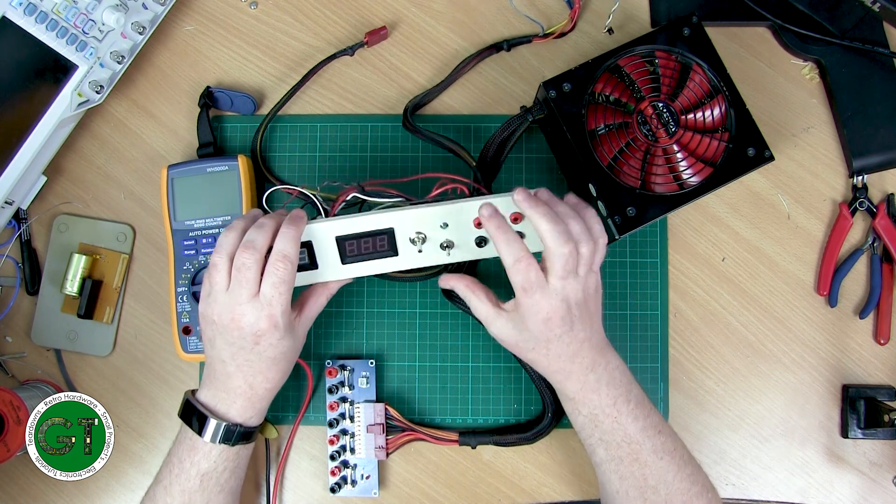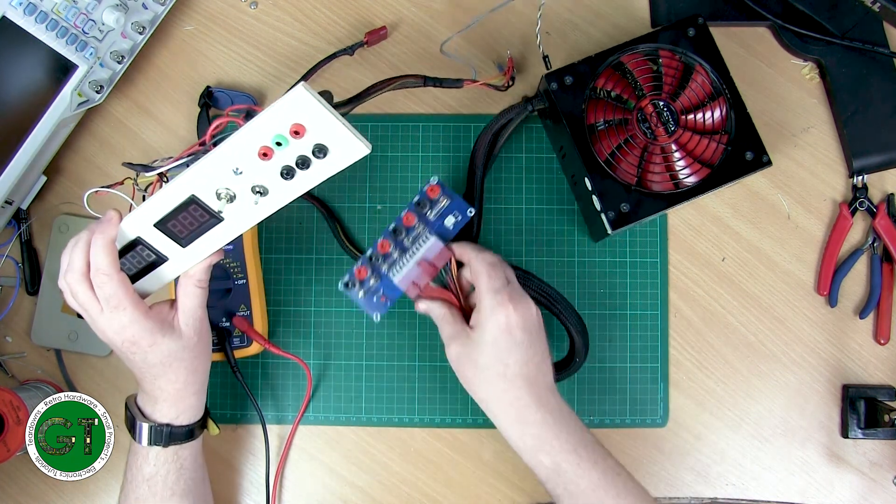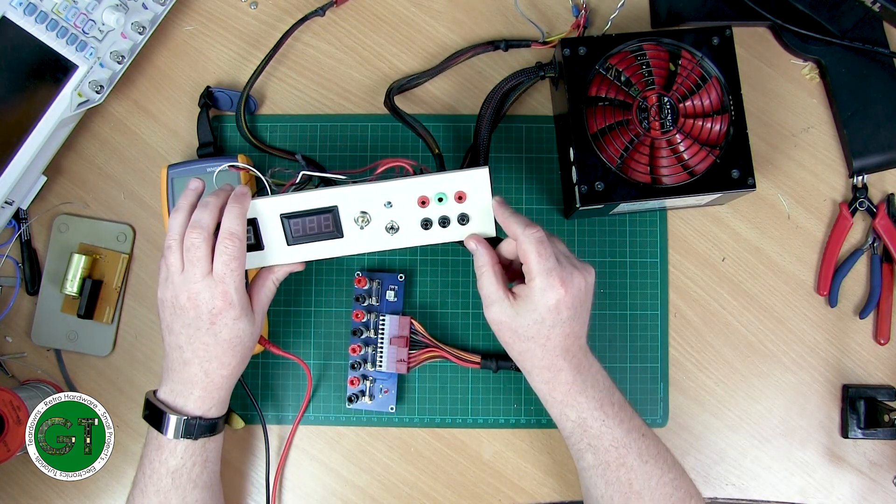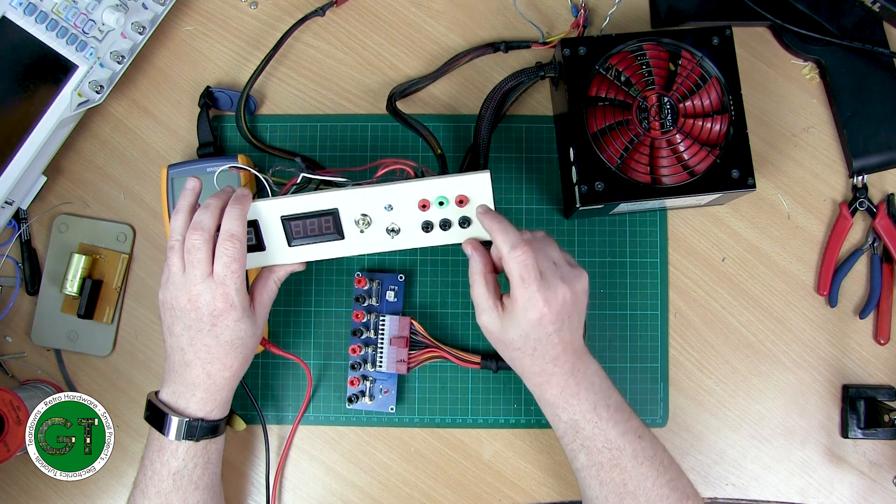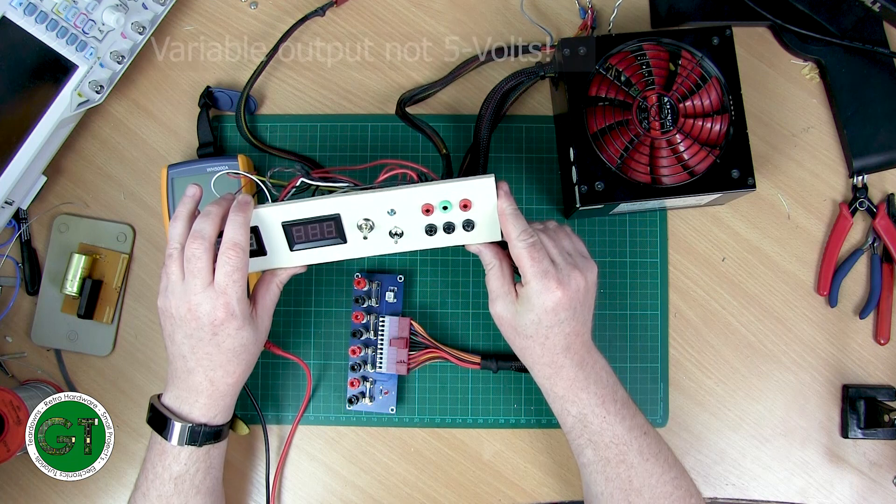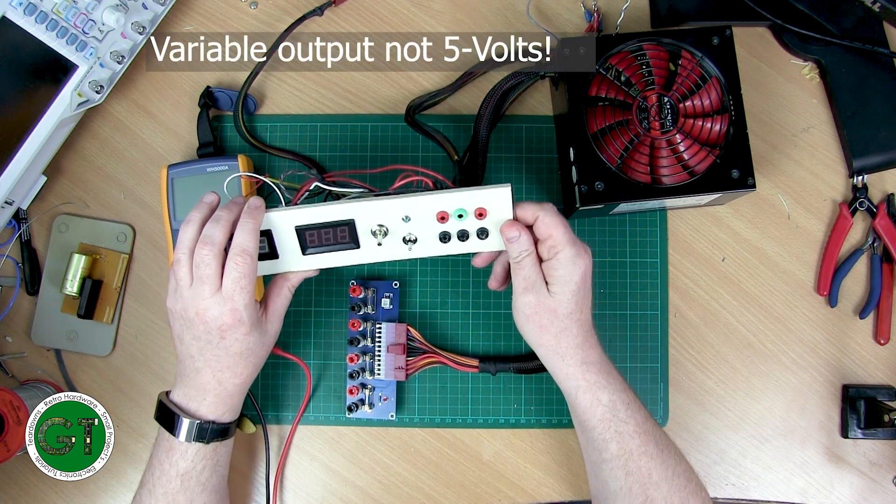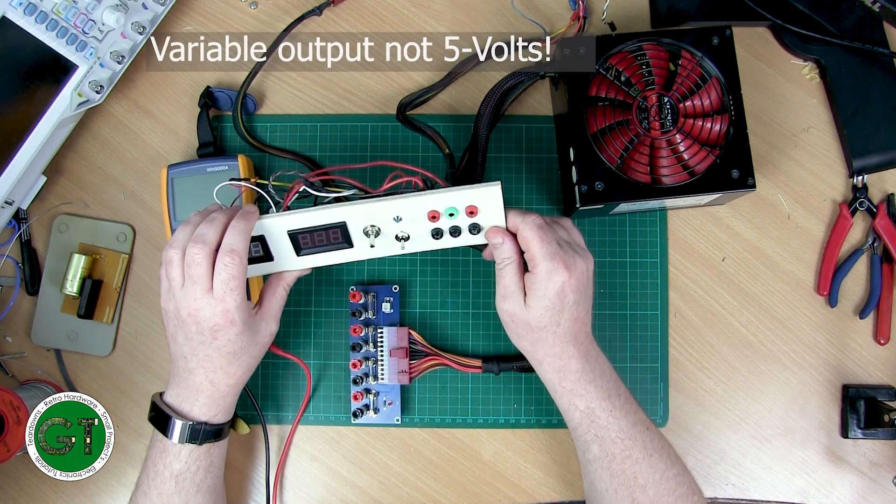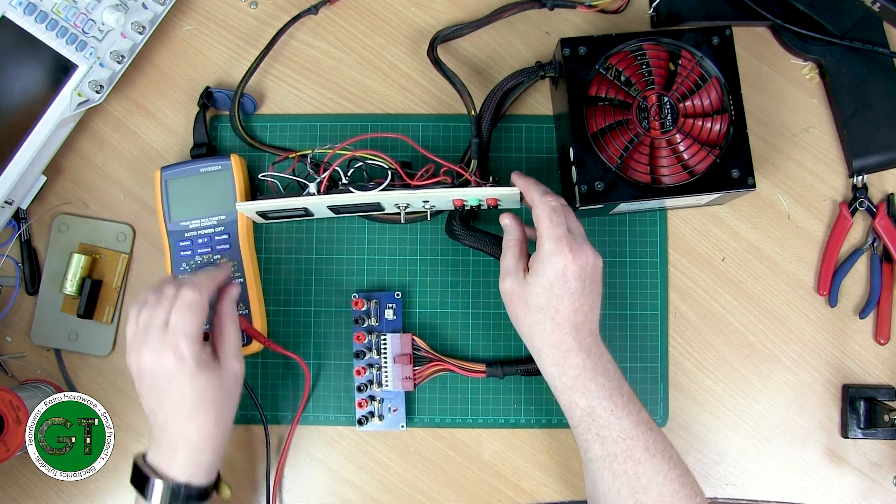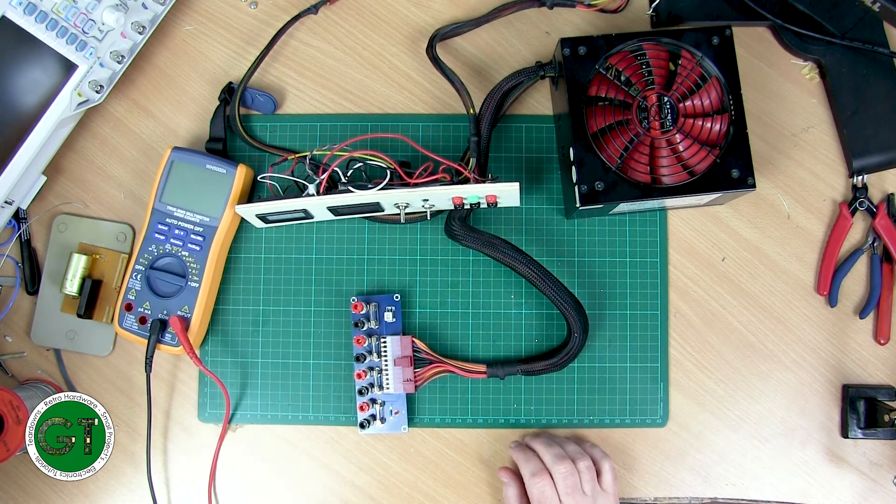And the switch to turn it on and off, which is why I've already replaced the switch on there. And then I've just got three sets of banana sockets on here. So I've got 12 volts, minus 12 volts and 5 volts. So I can just hook my projects up from there and then obviously just the indicator LED. And I'll just find myself a power cable, plug it in and I'll show you it working.